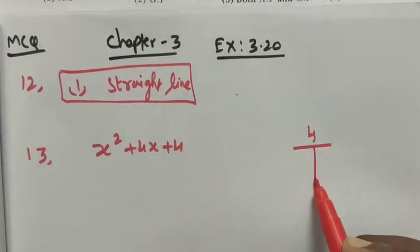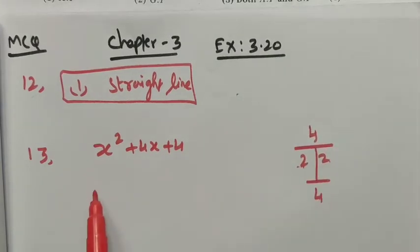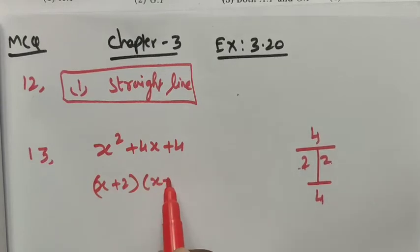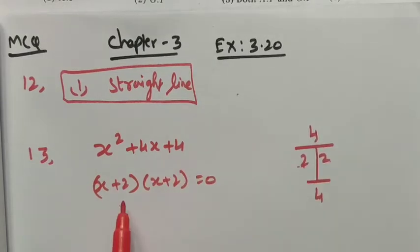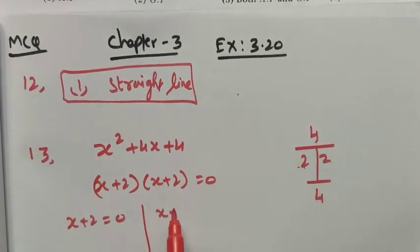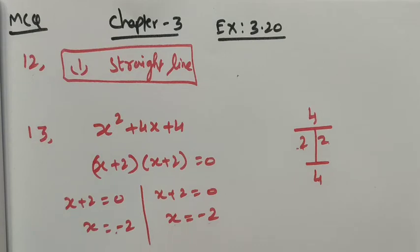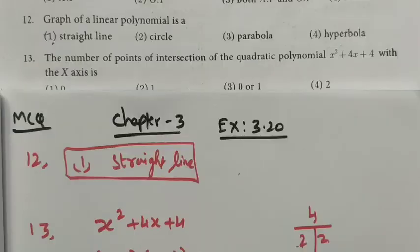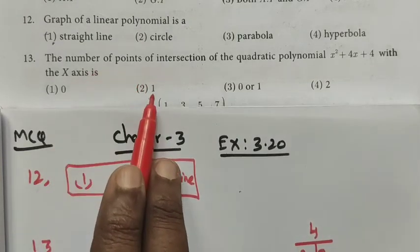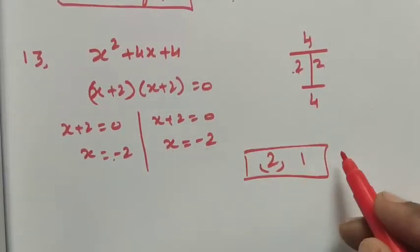When we factorize, we need two numbers that multiply to 4 and add to 4. That is 2 × 2 = 4 and 2 + 2 = 4. So the factors are (x + 2)(x + 2) = 0. This gives x + 2 = 0 and x + 2 = 0, both yielding x = −2. Since both roots are equal, there is only one point of intersection. Option two, one point, is the correct answer.